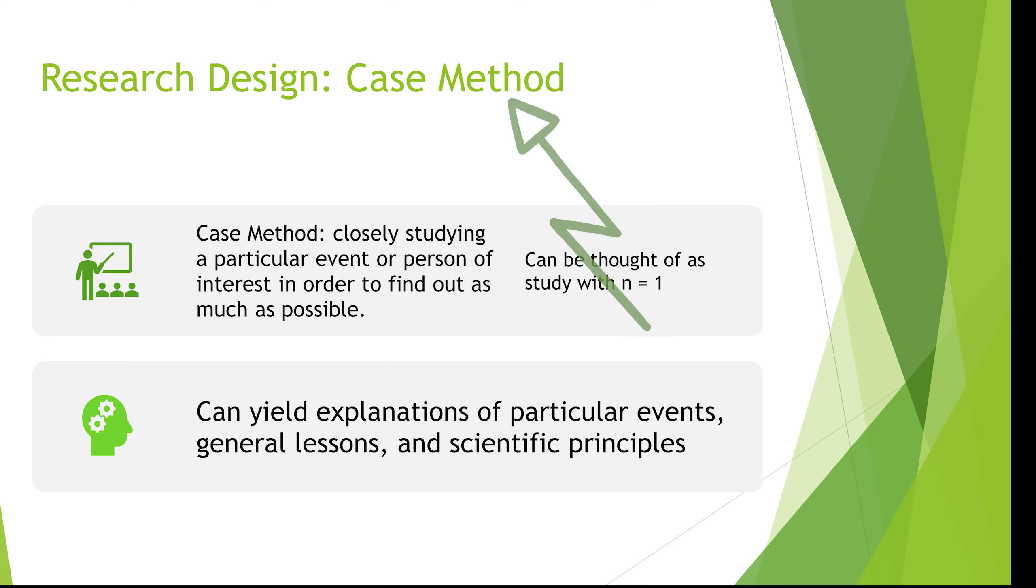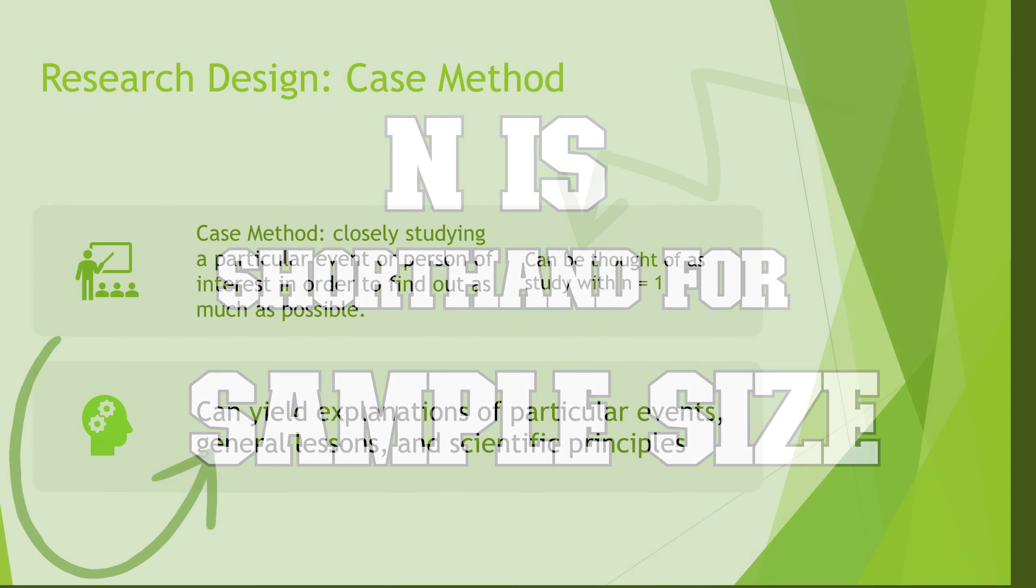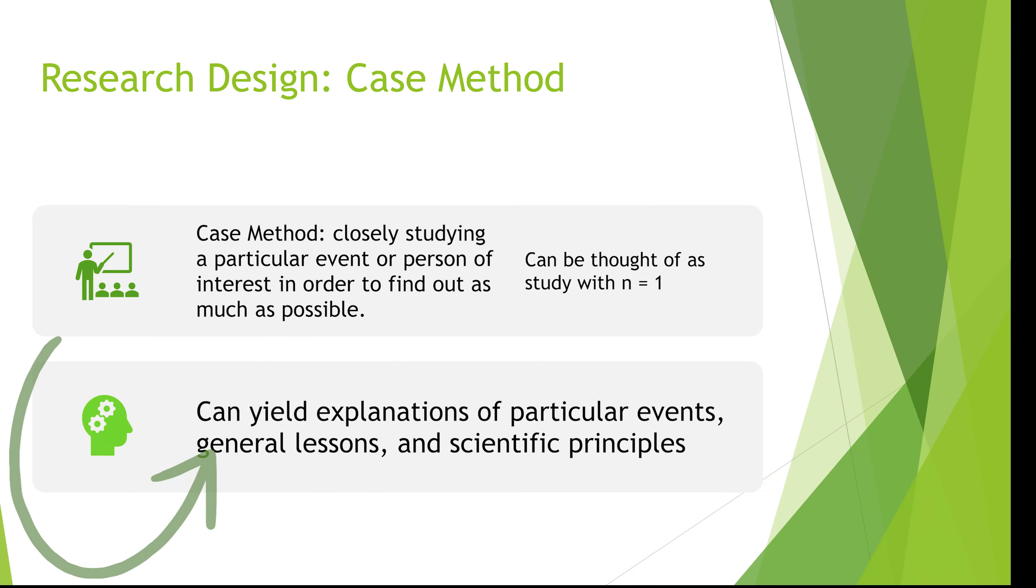The case method is the close studying of one particular event or person of interest in order to find out as much as possible. You can think about this study as a case of n equals 1. These can yield really great explanations about particular events, general lessons, or scientific principles. They can bring great inspiration to then do a more detailed project.